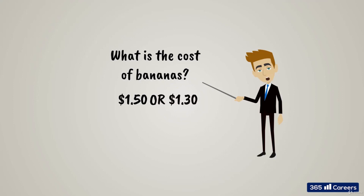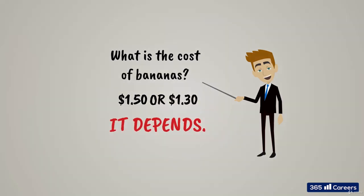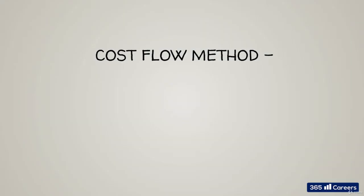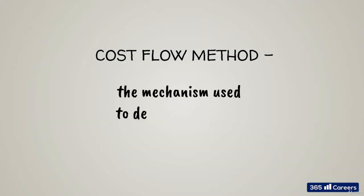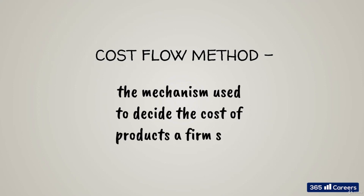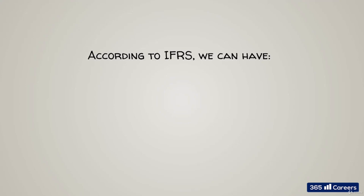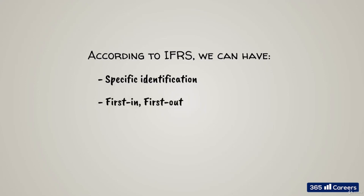Well, the short answer is: it depends. It depends on the cost flow method our firm has decided to use — the mechanism the company uses to decide which is the cost of the products it sells. Whether the cost is $1.50, $1.30, or something else in our example. According to the International Financial Reporting Standards, companies can choose between three cost flow methods: specific identification, first in first out, and weighted average cost.